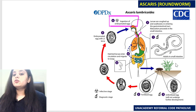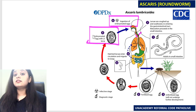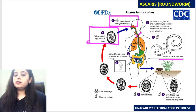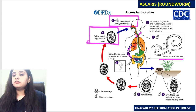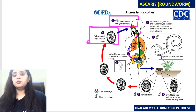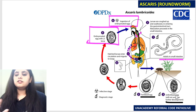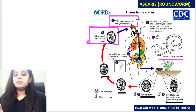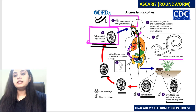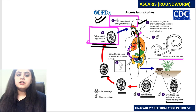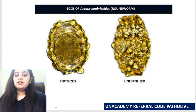Quick recap: humans are the only host. We ingest embryonated eggs, which contain larva. In the intestine, the larva either hatch into adults directly, or enter the circulation, go to the lungs, are coughed up, swallowed, and return to the small intestine. The worms fertilize, laying fertilized and unfertilized eggs. Fertilized eggs undergo further development to form embryonated eggs — which are what we consume to complete the cycle.